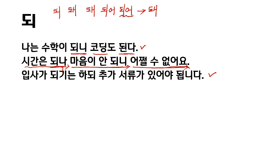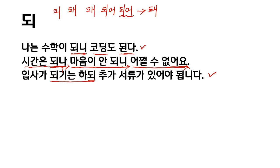입사가 되기는 하되 추가 서류가 있어야 됩니다. 되기는 하되 — 입사가 되기는, you are admitted, you are employed. This 되 is 'but.' So after a verb, you take 다 off and put 되 — this means 'but.' You are employed but there should be additional documents. 야 되다 means 'should/must.'